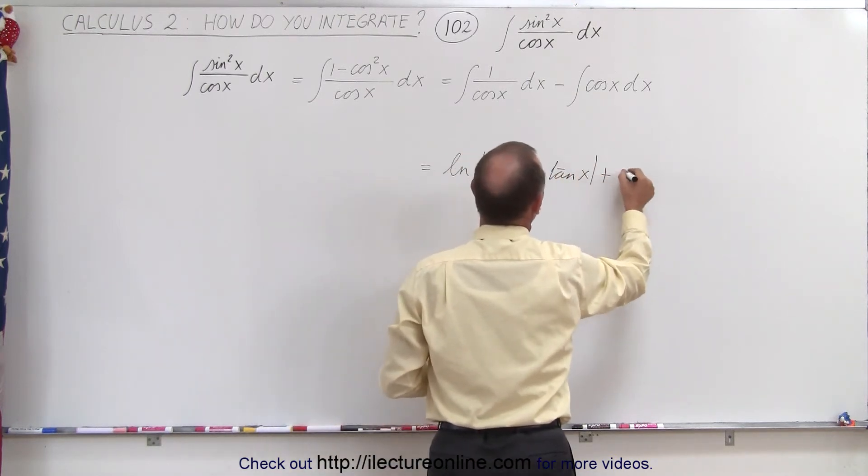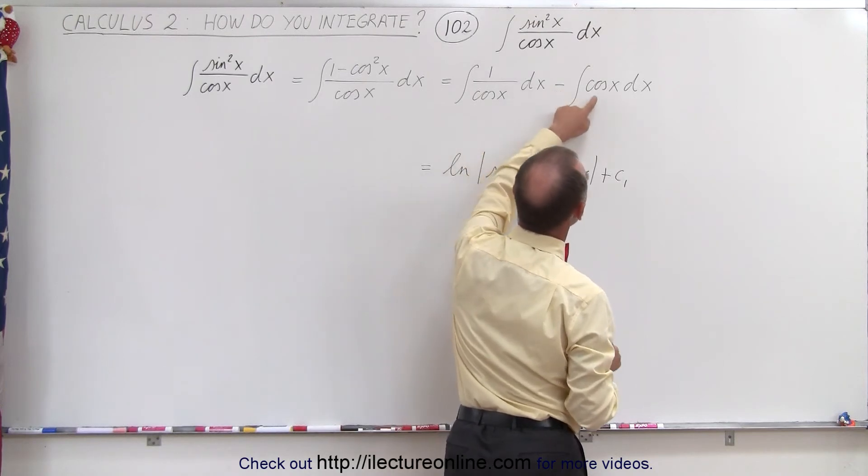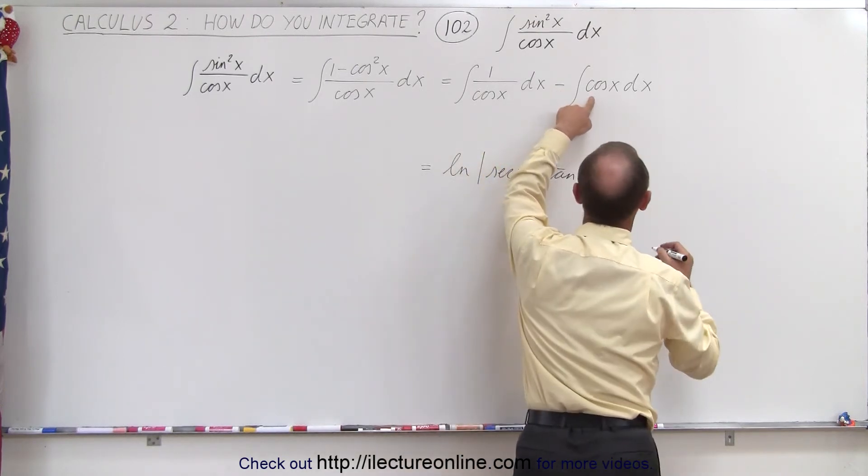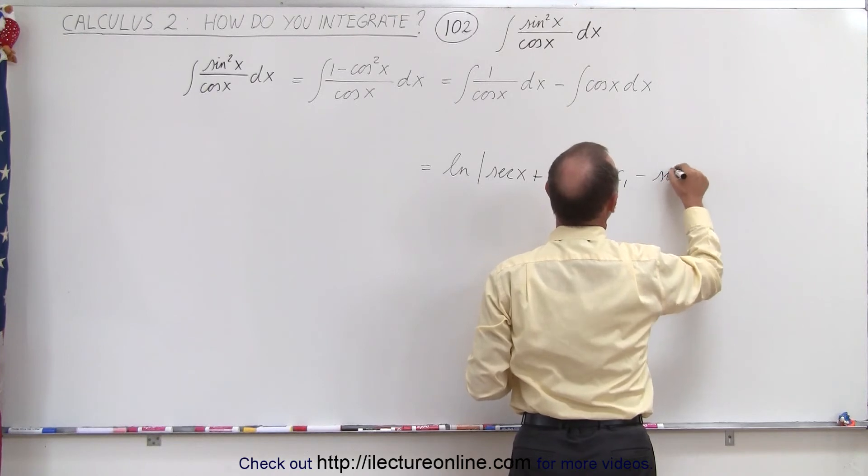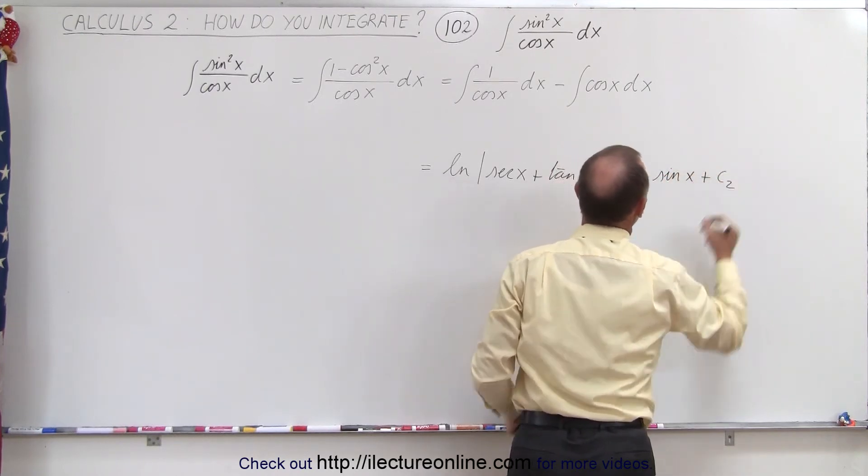And of course, we have a constant of integration. And then here, the integral of the cosine is indeed the sine. And so it would be minus the sine of x plus another constant of integration.